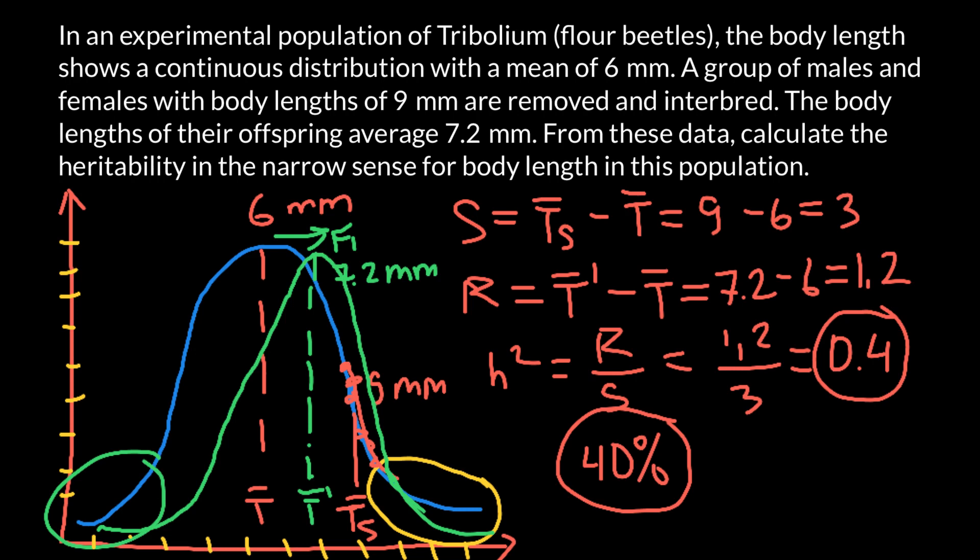But for plant breeders, it is very important to find h². If this number would be great, then plant breeders or animal breeders can work with such populations and breed for certain purposes. For example, for the size of the animal or plant, as in our example, the size of the beetle.